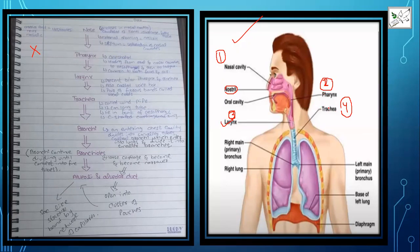The trachea is called the windpipe. It is a 12-centimeter-long tube that lies in front of the esophagus. Inside the trachea you can see rings of cartilage. The trachea then divides into two tubes, which we call bronchi.